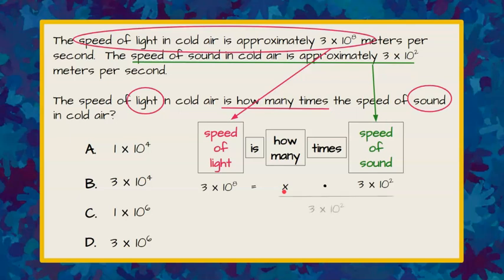To solve for x, I'm going to divide both sides by 3 times 10 squared. When I do this, 3 times 10 squared divided by 3 times 10 squared is 1, so that leaves me x on the right side.